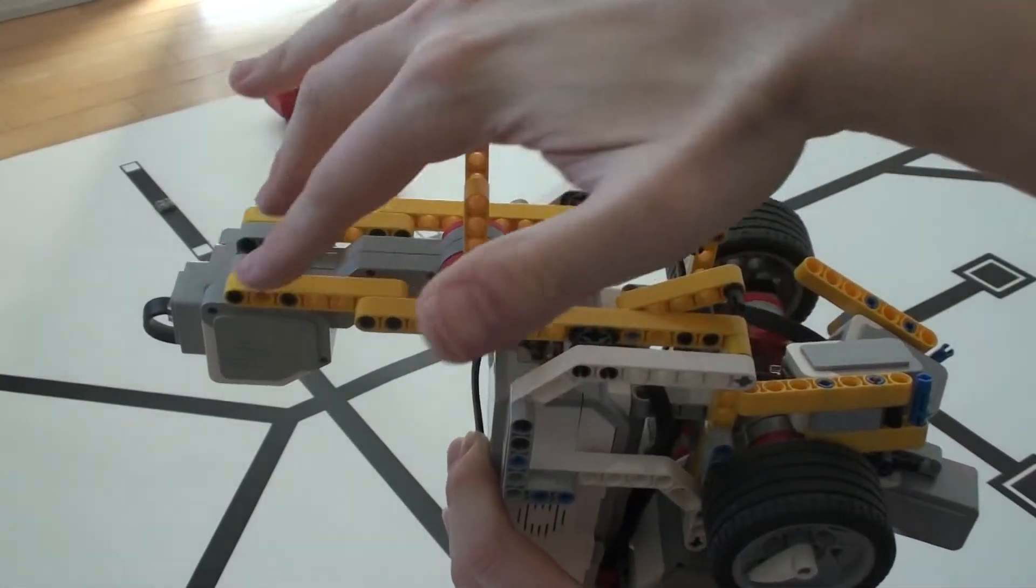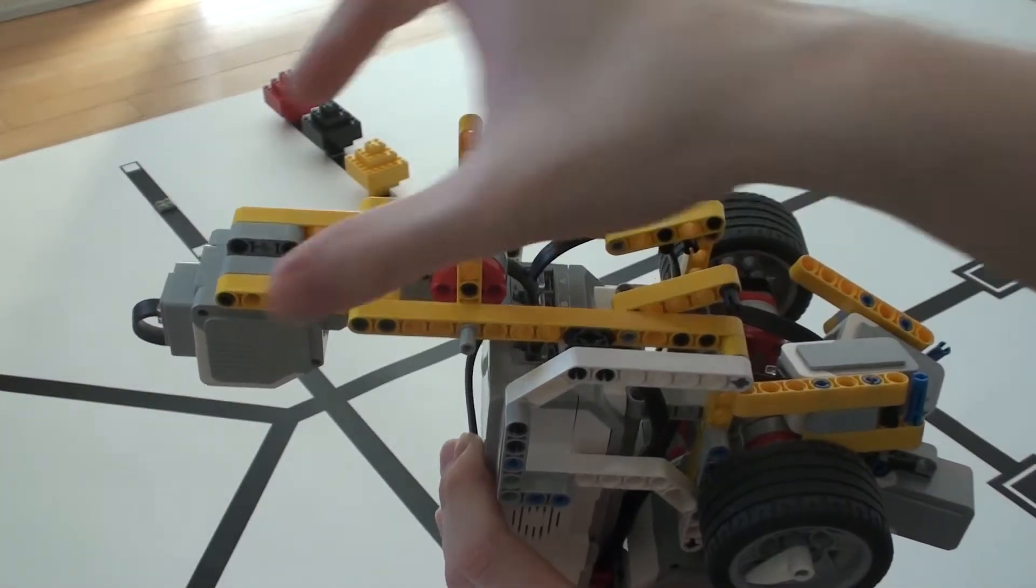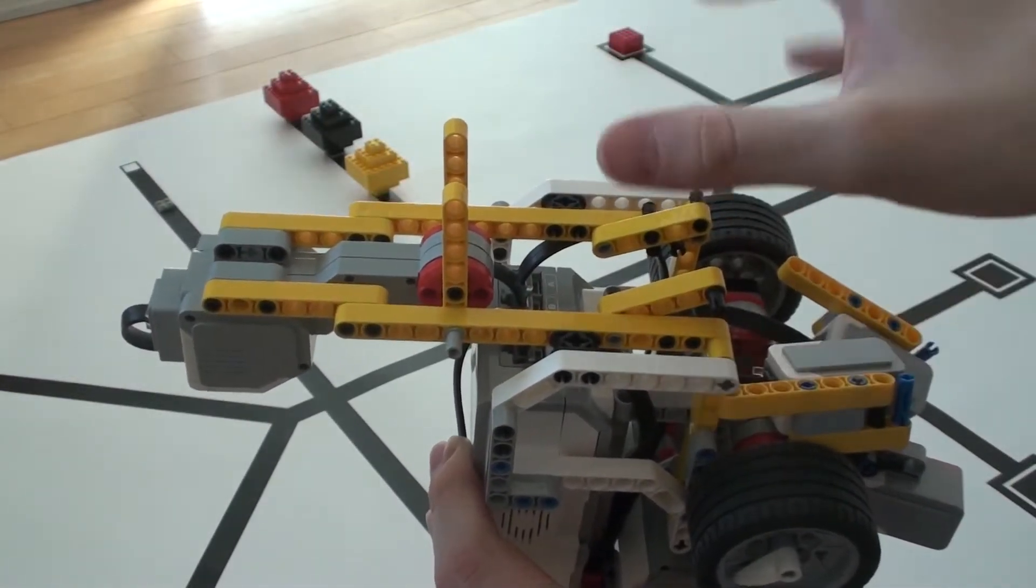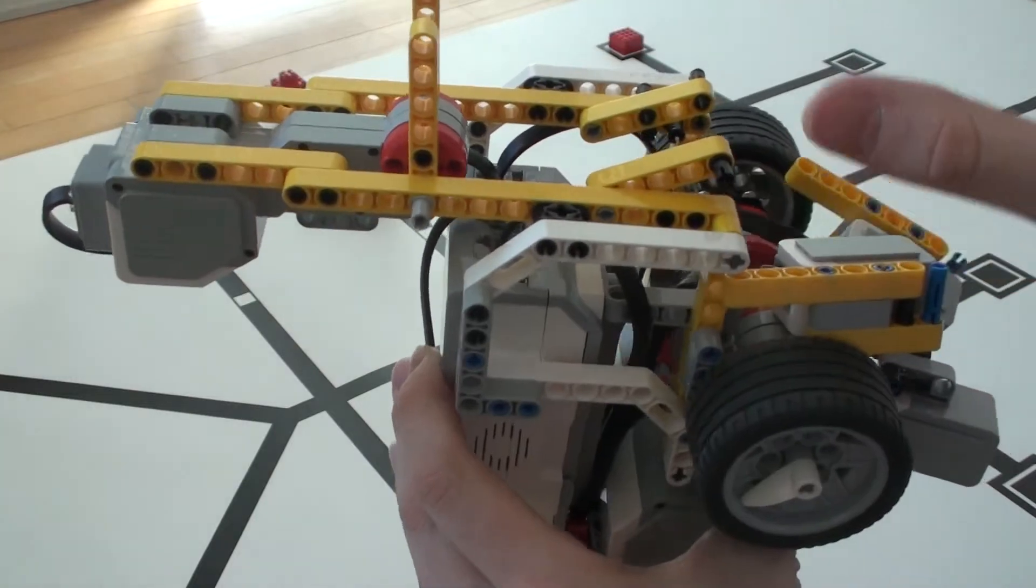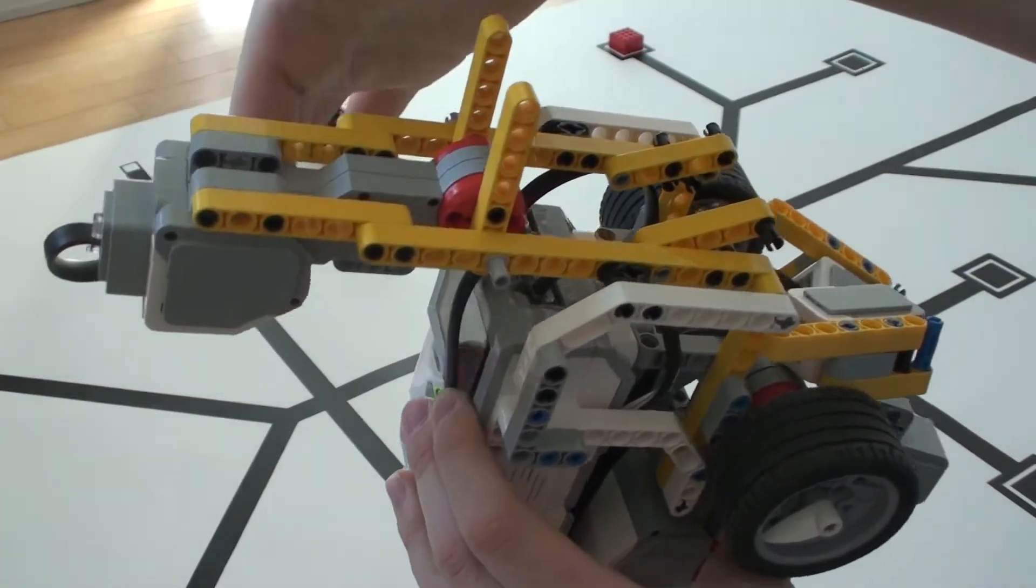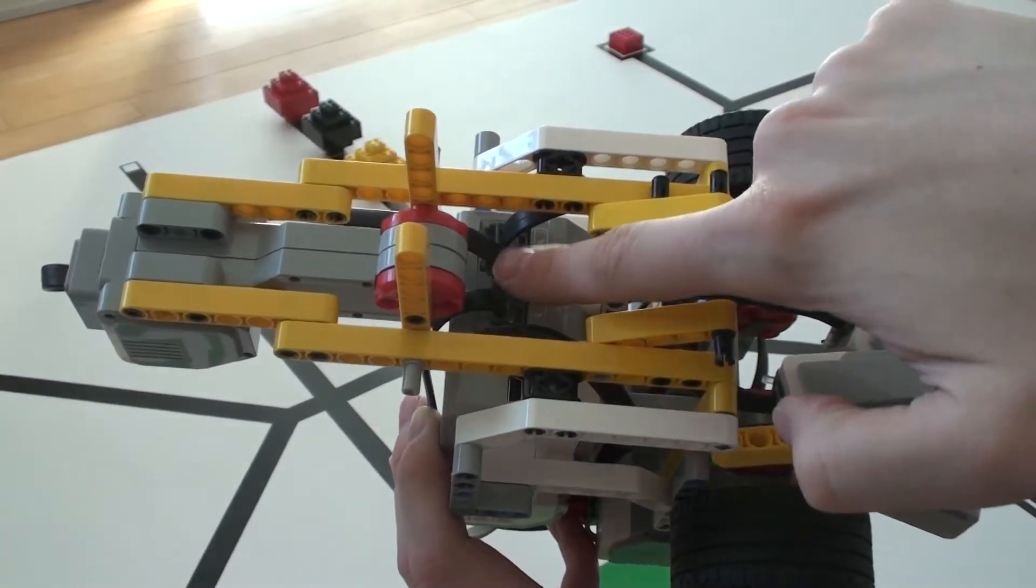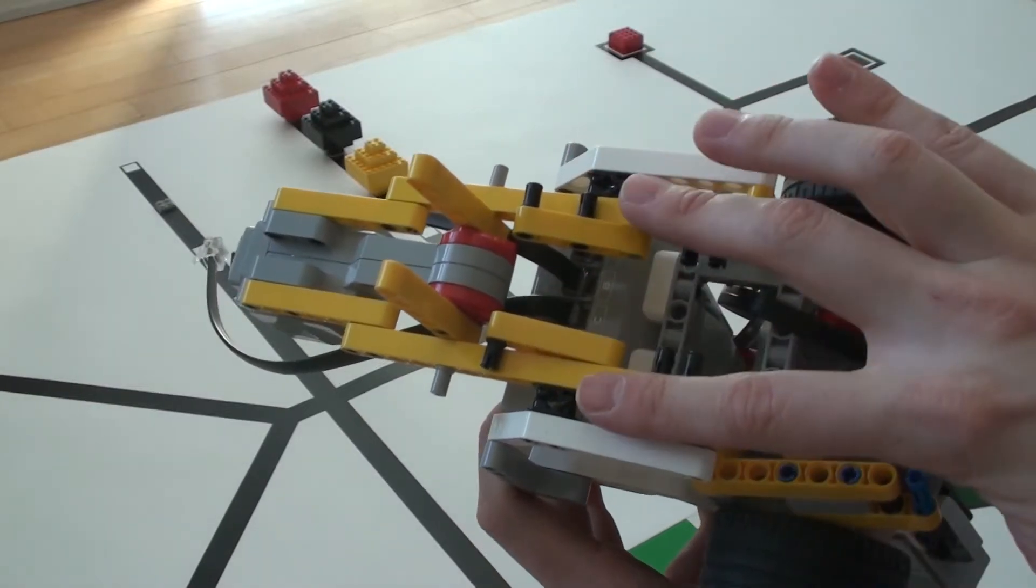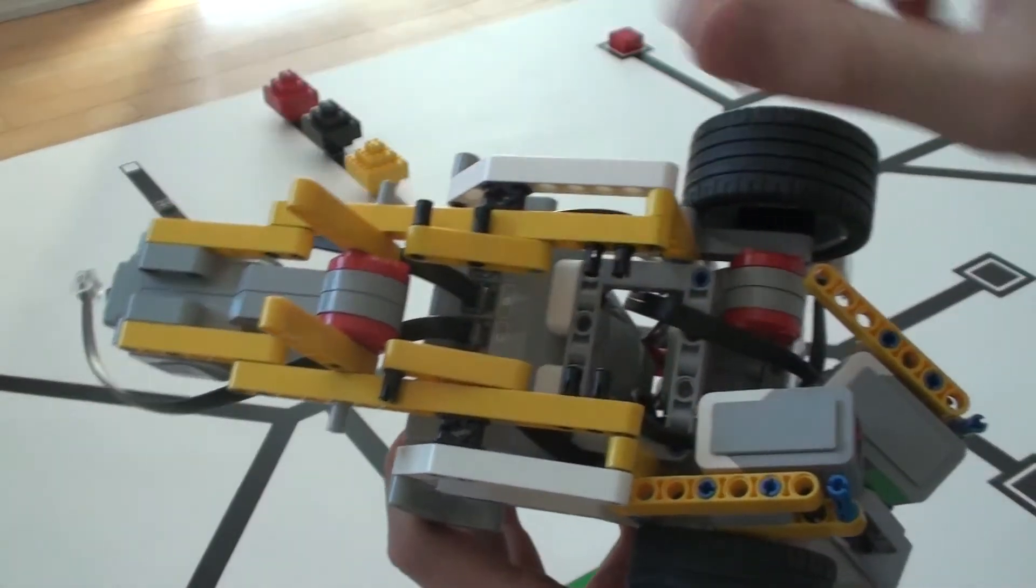The frame for the grabbing mechanism with the large motor is also an easy construction which there is building instructions for. And this motor is connected to port B.